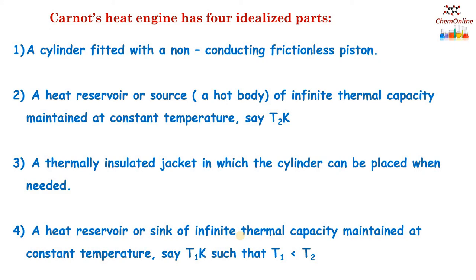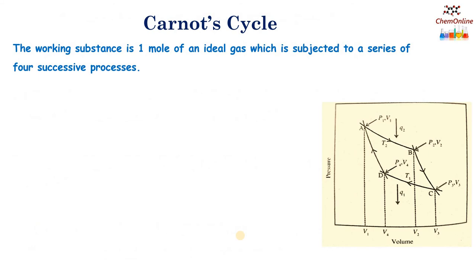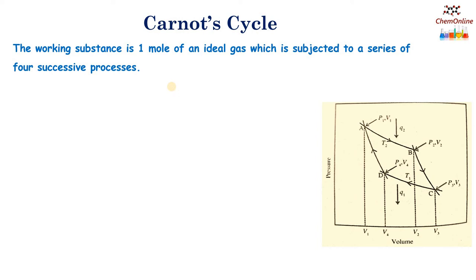These are the different parts of a Carnot's heat engine. Now let us discuss the processes occurring inside Carnot's heat engine. This is a cyclic process called Carnot's cycle. The working substance is one mole of an ideal gas that is subjected to a series of four successive processes. This diagram represents the Carnot's cycle on a pressure-volume diagram.